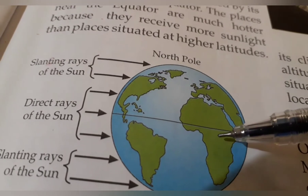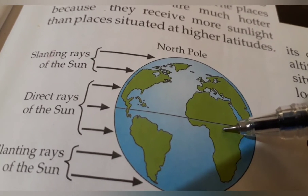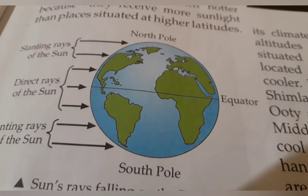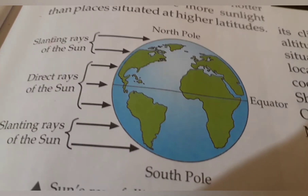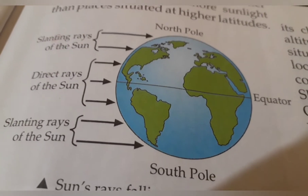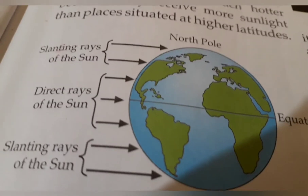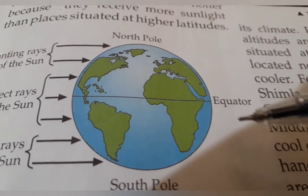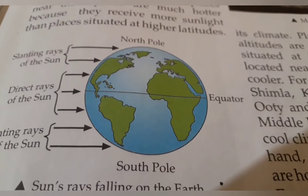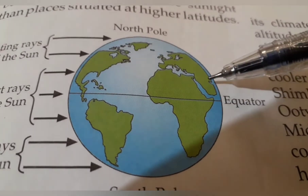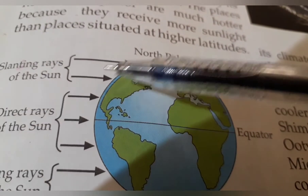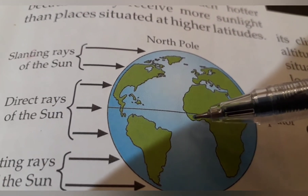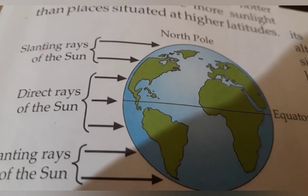Why does DRC have dense forest? Because of the hot, humid and wet climate. The places which receive the direct rays of the sun are the equatorial places. As we move away from the equator, we feel cool because of the slanting rays. And as we are nearer to the equator, we feel more heat because of the direct rays of the sun.